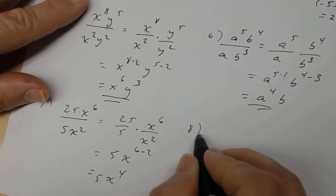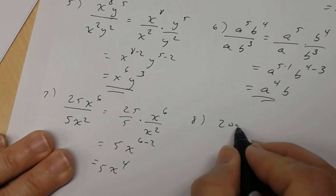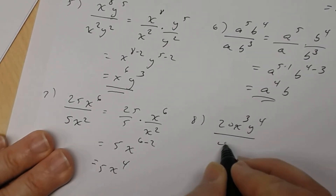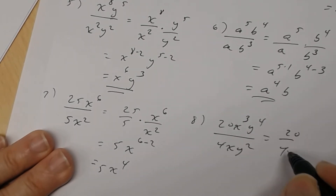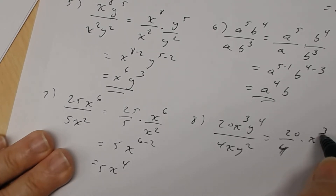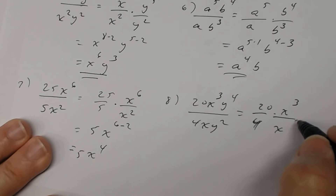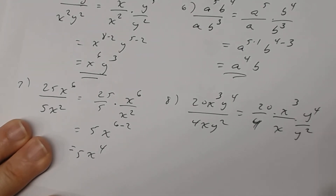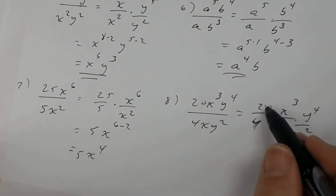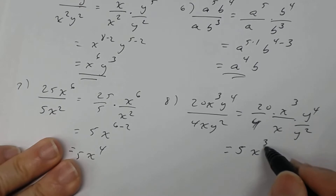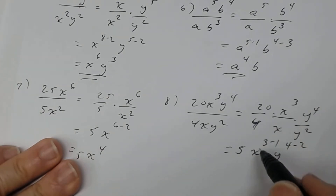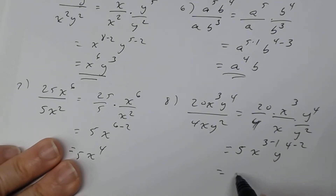Number 8: you have 20x cubed y to the 4th divided by 4xy squared. Separate fractions: 20 divided by 4 for the coefficients, x cubed divided by x, times y to the 4th divided by y squared. 20 divided by 4 is 5. Then x cubed subtract 1, y to the 4th subtract 2. So the answer is 5x squared y squared.